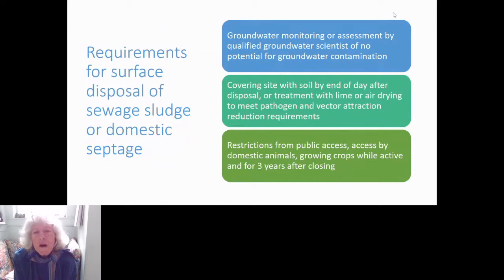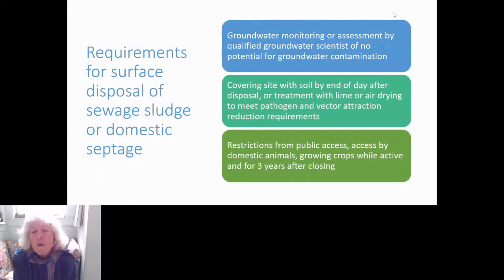Another requirement is to meet vector attraction reduction requirements, which means preventing fleas, rats, and other vectors from getting in. The most common way to do this is to cover the site with soil by the end of each day after the septage or sewage sludge has been disposed. Or you can treat it with lime and raise the pH to 12, or you can air dry it in a drying bed to the point where it's been dried for several months and there's no longer a vector attraction reduction issue.